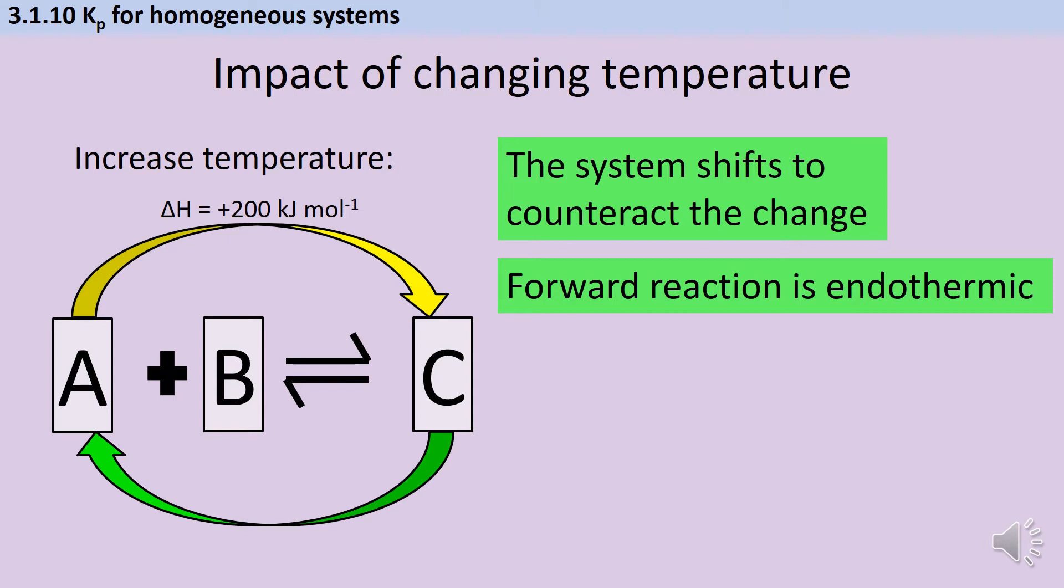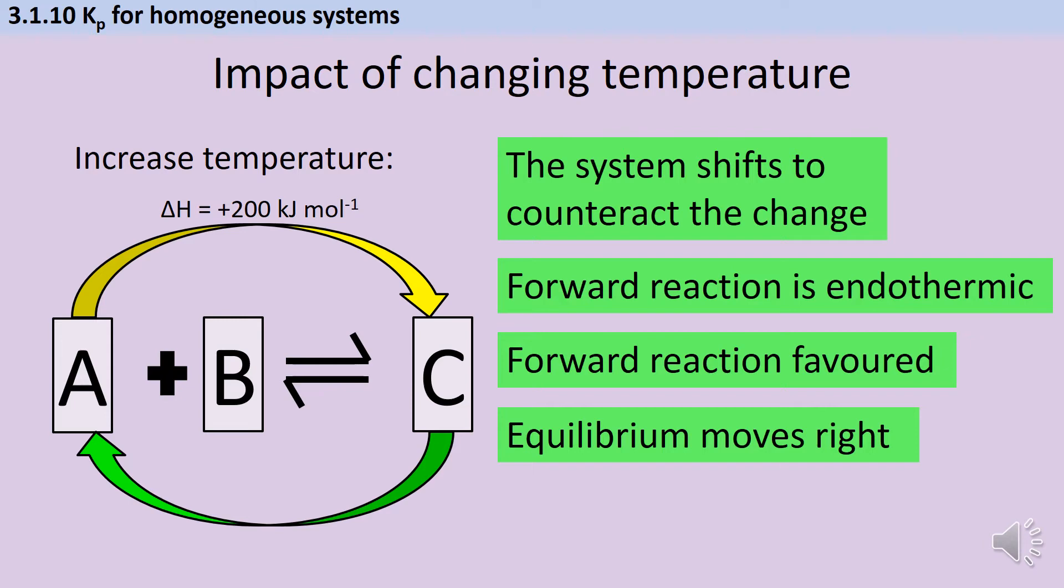So if we increase the temperature, the system will shift to reduce the temperature by favouring that endothermic reaction. And therefore, the forward reaction is favoured. Therefore, the equilibrium is going to move to the right and the yield of product C will increase.